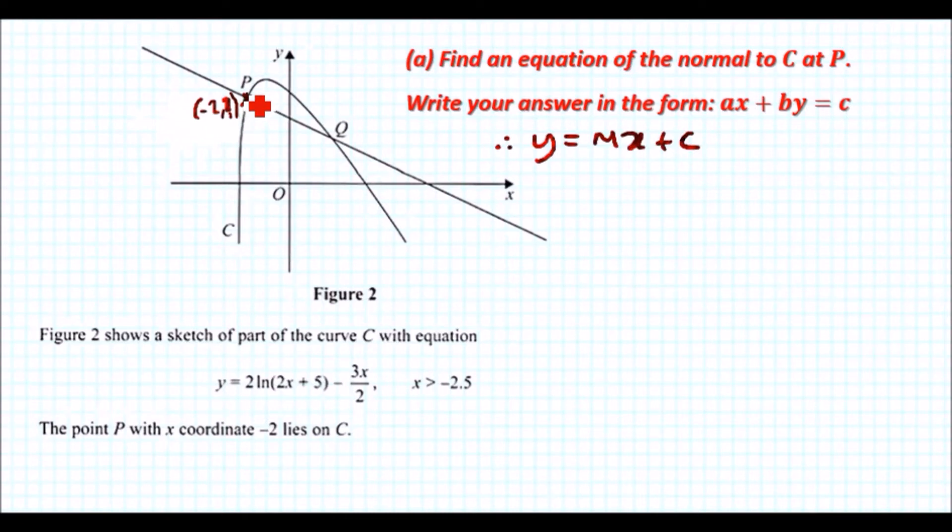Since x is minus 2, let's find the value of y. We plug the x value into the equation: y = 2 log of (minus 2 minus 2 + 5), which is 2 log(1). Since log 1 is 0, plus 3 times minus 2 over 2 gives us plus 3. Therefore, the coordinates of P are (-2, 3).